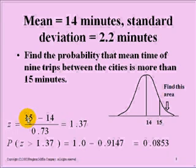We take our x, 15 minutes, and subtract our mu of 14 minutes, divide that by our 0.73, and we have a z-score of 1.37.